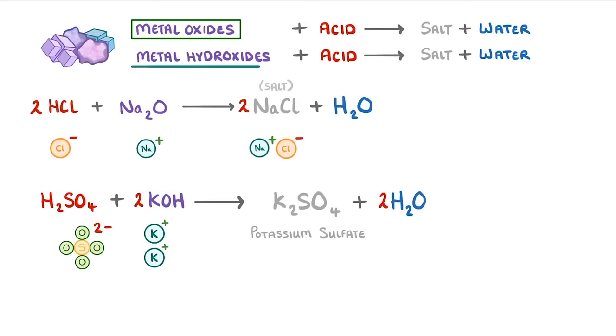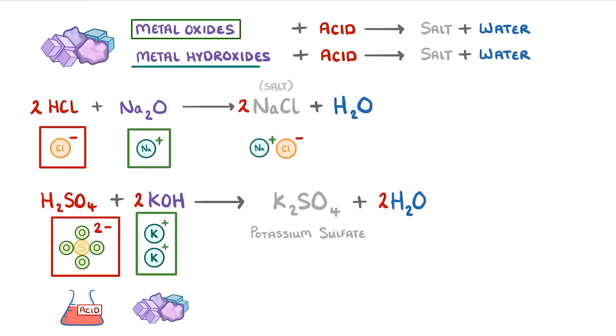These types of reactions always follow the same pattern. You take the negative ion from the acid and combine it with the positive ion from the base to form a salt. And you always get water. You just have to be careful to get your salt formula right and balance the whole thing correctly.